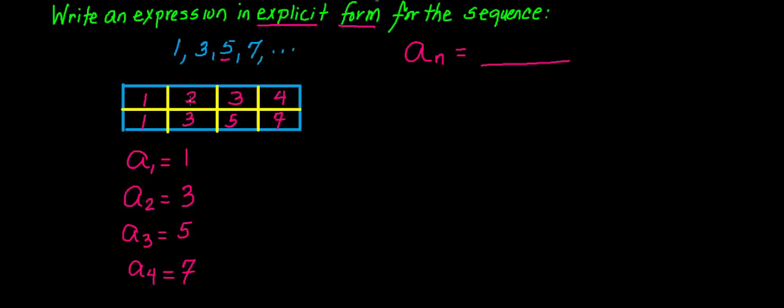Another thing I notice is 2 and 3. If I multiply 2 times 2, I get 4, which is 1 more than 3. If I multiply 3 times 2, I get 6, which is 1 more than 5. And if I multiply 4 times 2, I get 8, which is 1 more than 7. I see a pattern here.